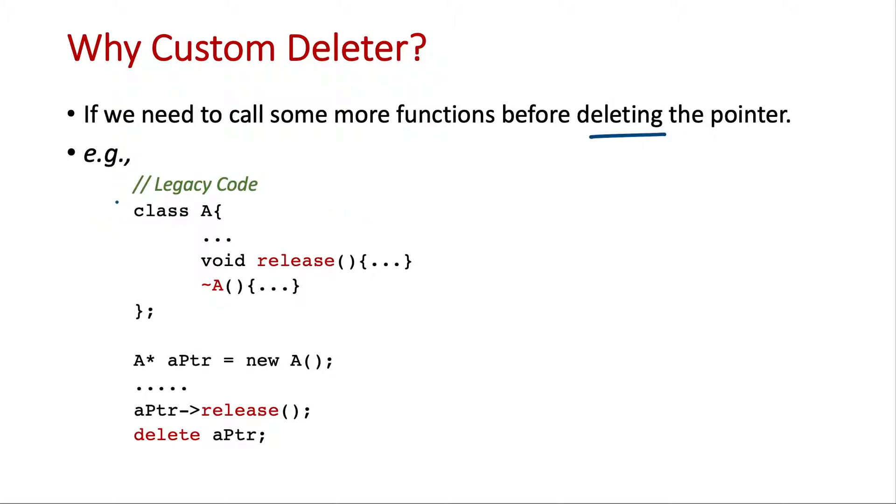For example, we have a legacy code here which has a class A and it has allocated many resources. And then it defines one function release where it will free all those resources in some custom way. And it also provides the destructor.